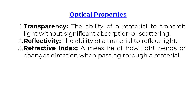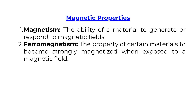Optical properties include: Transparency — the ability of a material to transmit light without significant absorption or scattering. Reflectivity — the ability of a material to reflect light. Refractive index — a measure of how light bends or changes direction when passing through a material. Magnetic properties include: Magnetism — the ability of a material to generate or respond to magnetic fields. Ferromagnetism — the property of certain materials to become strongly magnetized when exposed to a magnetic field.